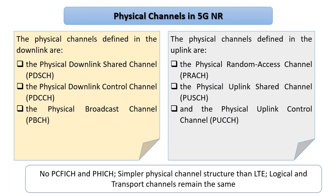Before going to the next channel, I want to briefly differentiate between LTE and 5G NR with respect to physical channels. Many channels are the same, but what is absent in 5G NR are two channels: PCFICH and PHICH. PCFICH indicates how many symbols to look for PDCCH in a subframe, while PHICH is used for HARQ ACK/NAK. In other videos, I will come back to certain intricate differences in different channels.